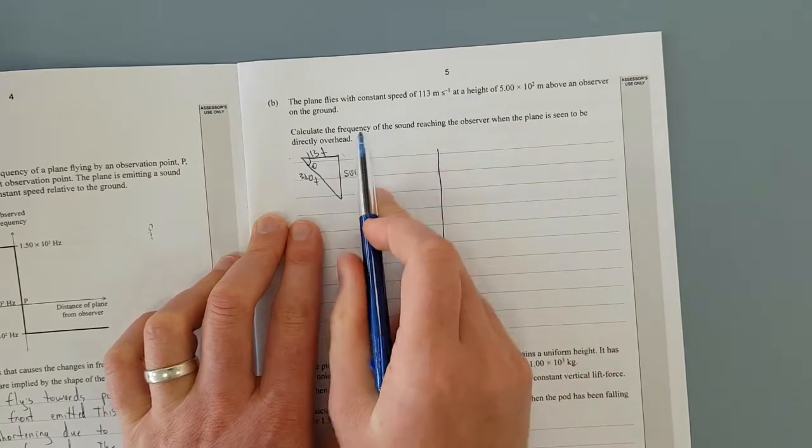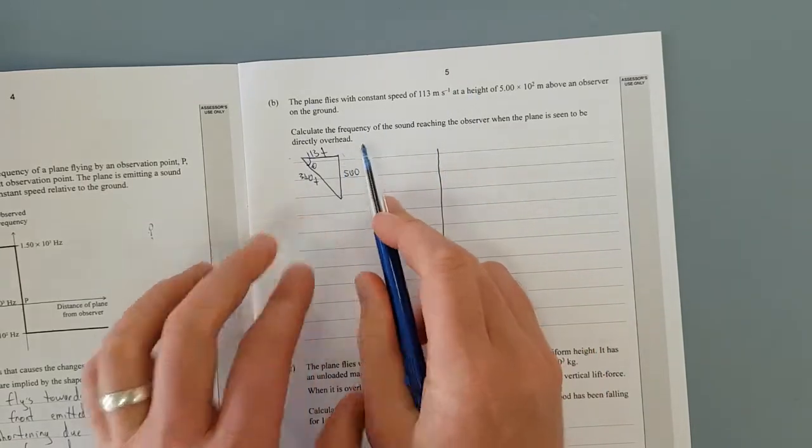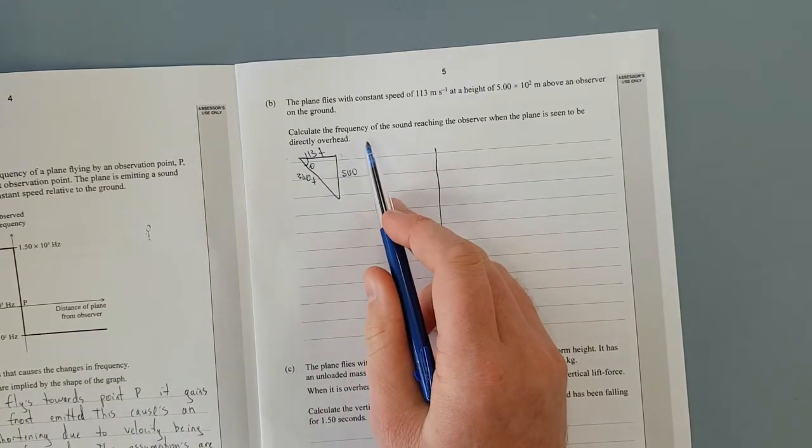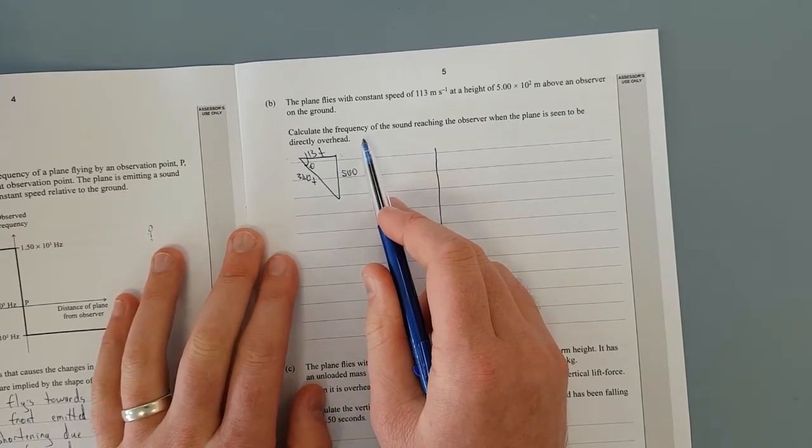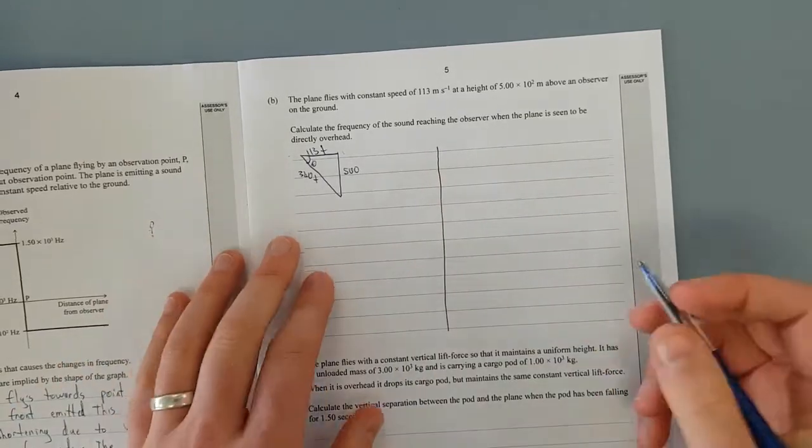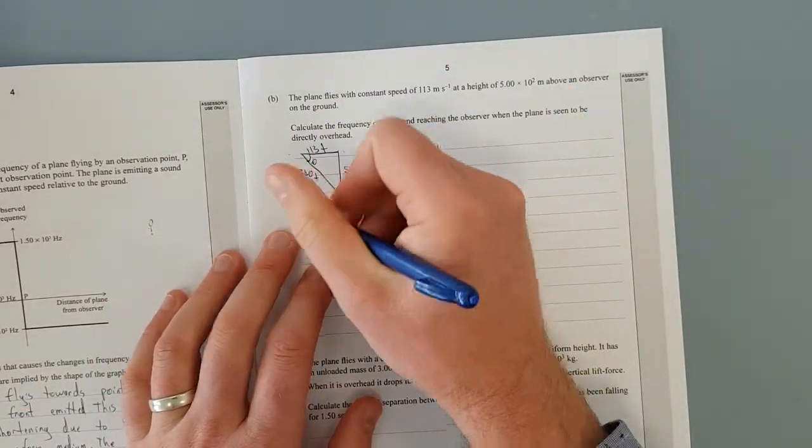So the 113 metres per second has a velocity going sideways. We're going to find the velocity, the direct velocity towards you. So let's just write this out.